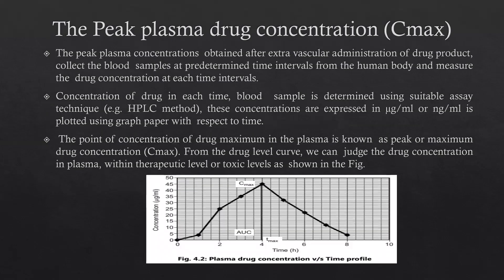The peak plasma drug concentration, or Cmax, is obtained from the extravascular administration of the drug product. Blood samples are collected at predetermined time intervals from the human body, and the drug concentration is measured at each time interval.